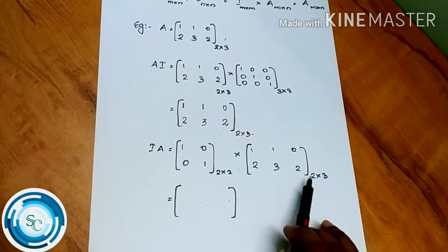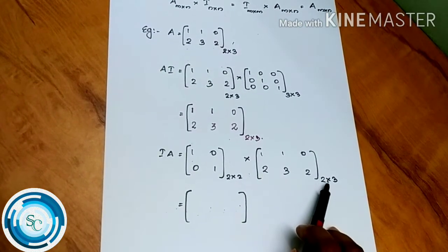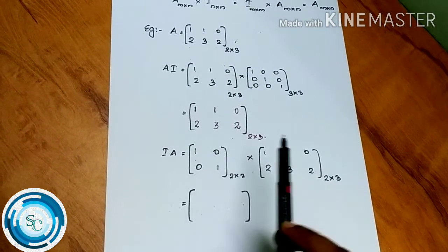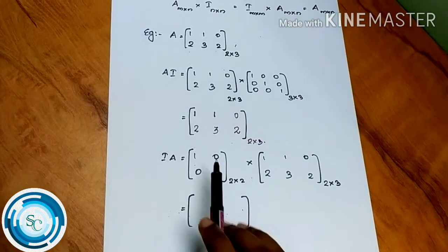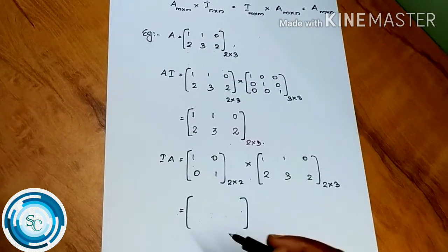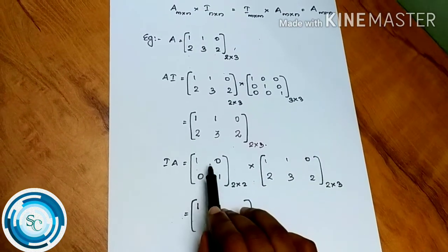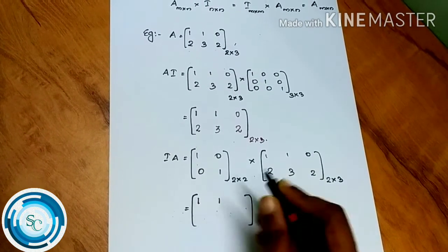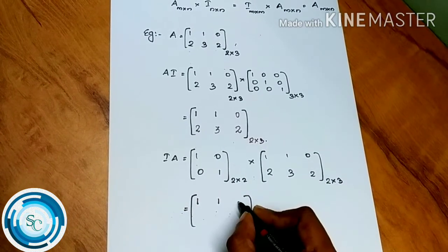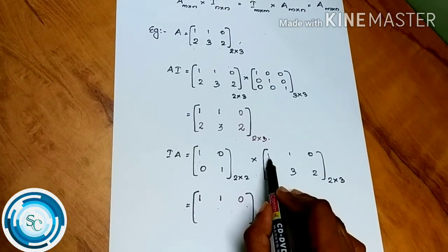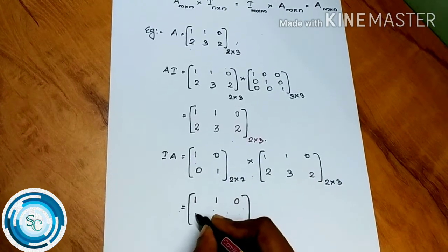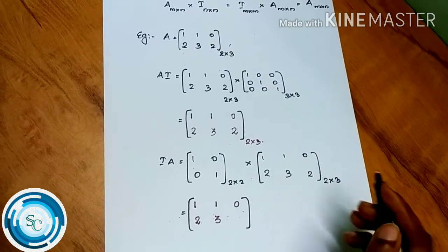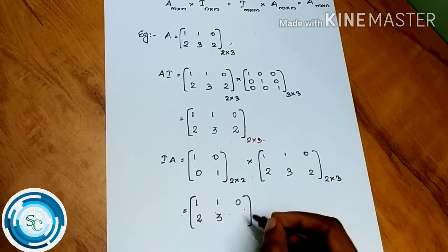For I_2·A, we use the 2×2 identity matrix and multiply by the 2×3 matrix A. Computing: 1×1 + 0×2 = 1; 1×1 + 0×3 = 1; 1×0 + 0×2 = 0; 0×1 + 1×2 = 2; 0×1 + 1×3 = 3; 0×0 + 1×2 = 2. The result is the 2×3 matrix A.